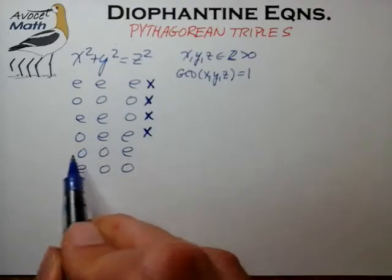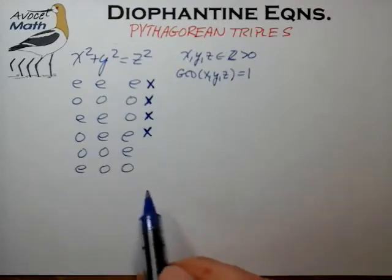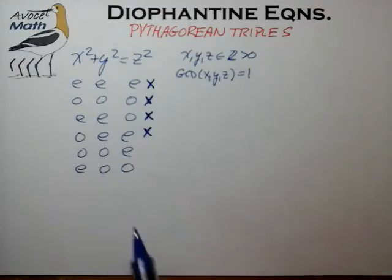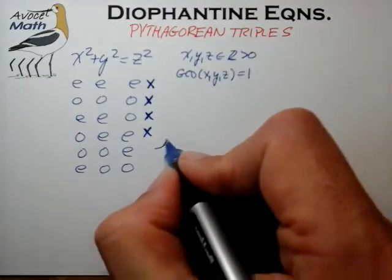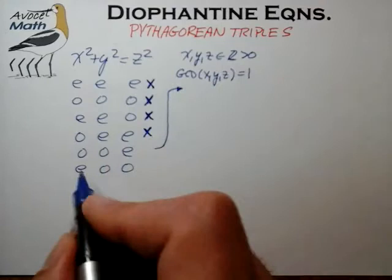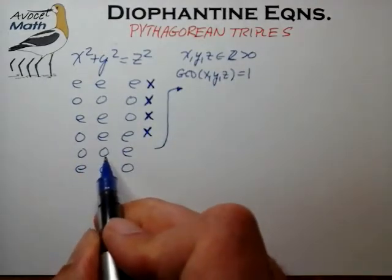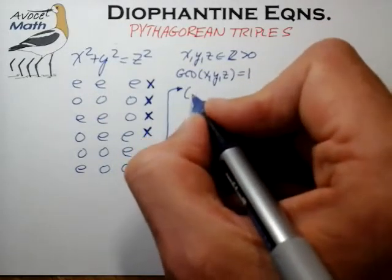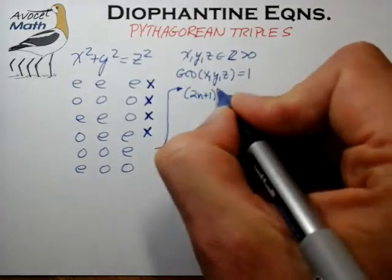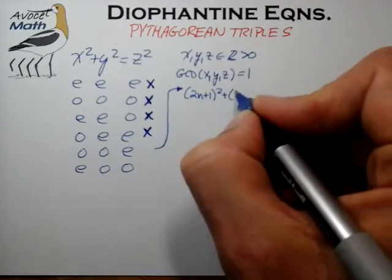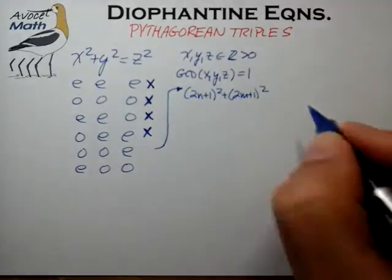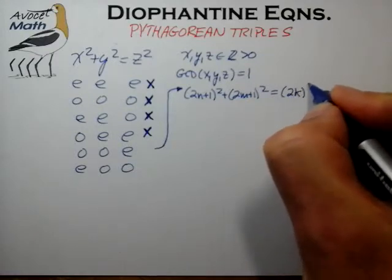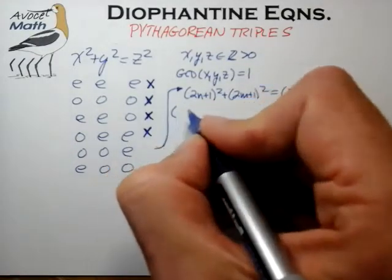These last two cases do look possible at first glance: odd plus odd can certainly equal an even, and even plus odd can certainly equal an odd. So let's explore these further. Let's take the first case and try to write out what an odd squared plus an odd squared would look like and compare that to what an even squared looks like. An odd squared would be something of the form (2n + 1) squared plus some other integer, say (2m + 1) squared, and we want to see if we can make that equal to some even number, say (2k) squared.